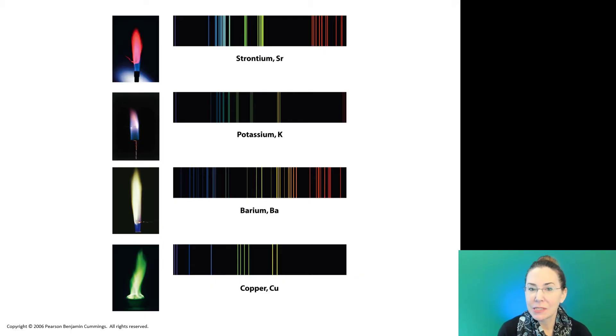We can use this to identify different elements. If we do a flame test, which is a lab we're going to look at later in this unit, we can see different colors being emitted by heating up different elements or supplying them energy. Then you can see the distinct pattern of bands or colors produced by each element.